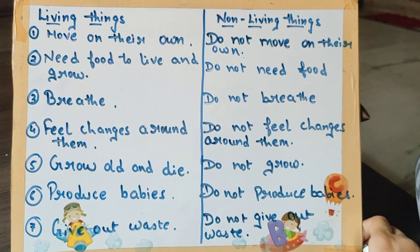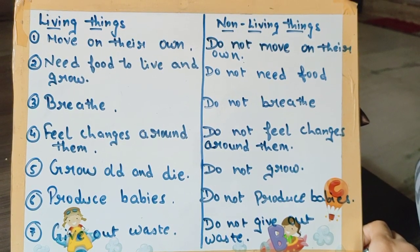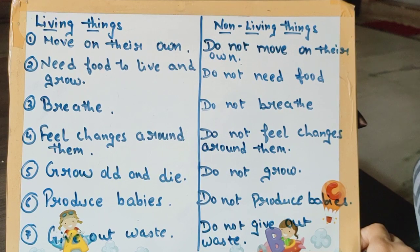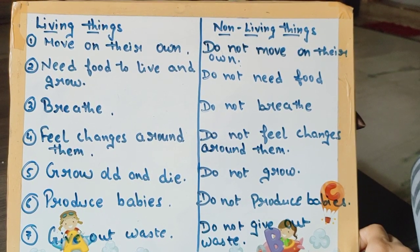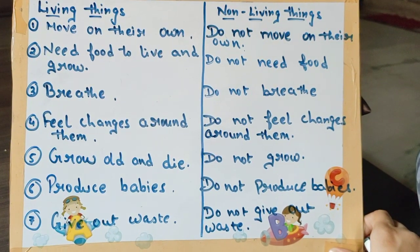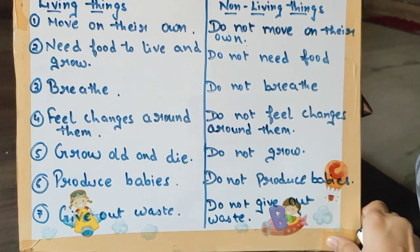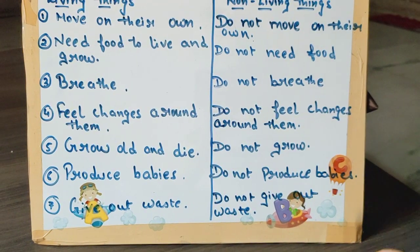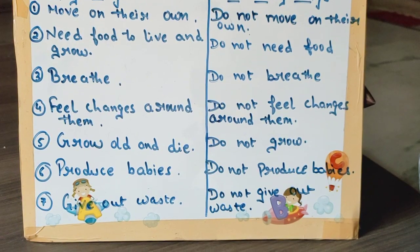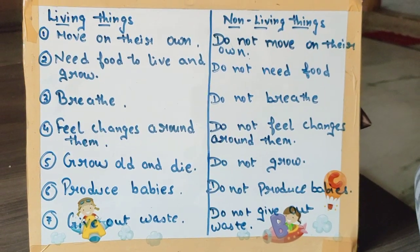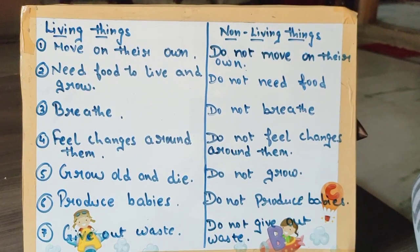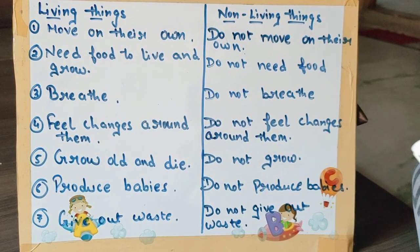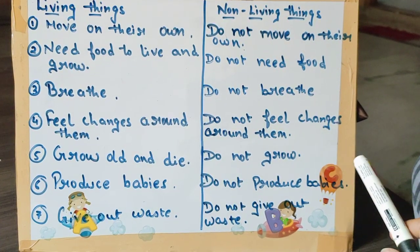Third point: living things breathe. Those who have life, they breathe, and non-living things do not breathe. Fourth point: living things feel changes around them. If we get hurt, we scream or shout — that means we are feeling. But non-living things do not feel changes around them.